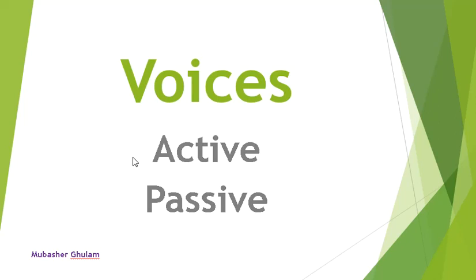It doesn't mean that if I am speaking a sentence silently, that is passive voice, and if I am speaking a sentence with a loud voice, that is active voice. So how can we say one voice is active and one is passive? Or one sentence is active and one sentence is passive? The basic thing that makes the difference: when a particular part of the sentence is active, the sentence is called active, and when we deactivate that part, the sentence is passive.